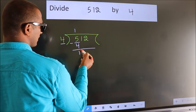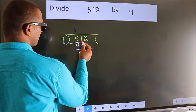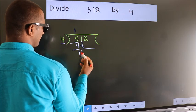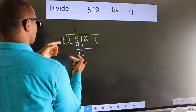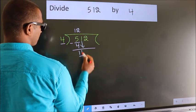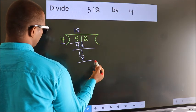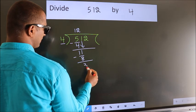After this, bring down the beside number. So, 1 down. So, 11. A number close to 11 in the 4 table is 4 twos, 8. Now, we subtract. We get 3.